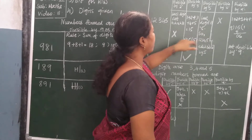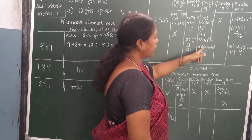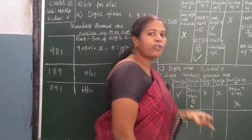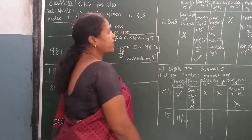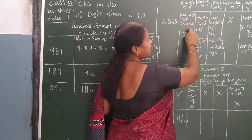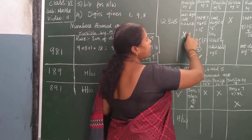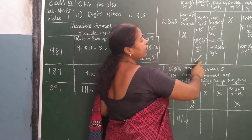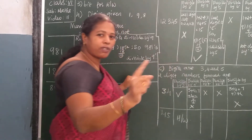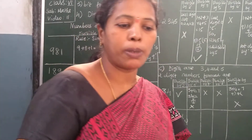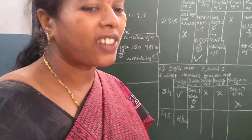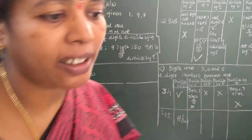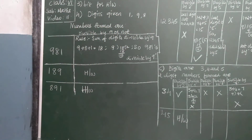Last digit is 5, so 12345 is divisible by 5. Divisibility rule for 6: since it is not divisible by 2 but it is divisible by 3, one of the conditions fails. Therefore, it is not divisible by 6.